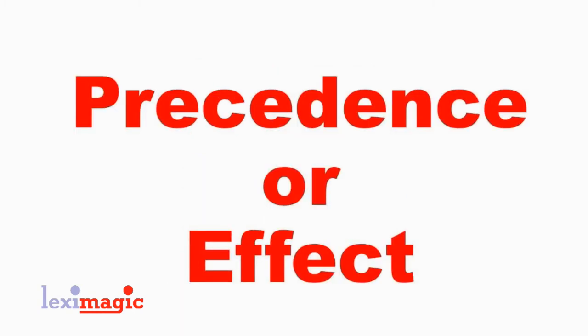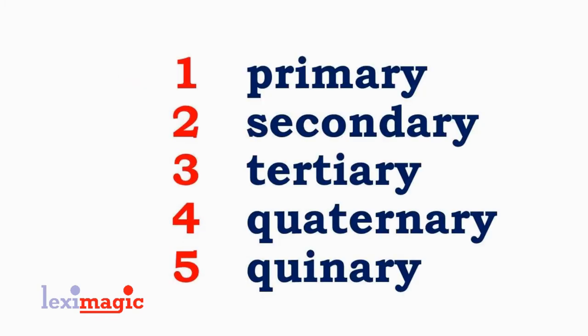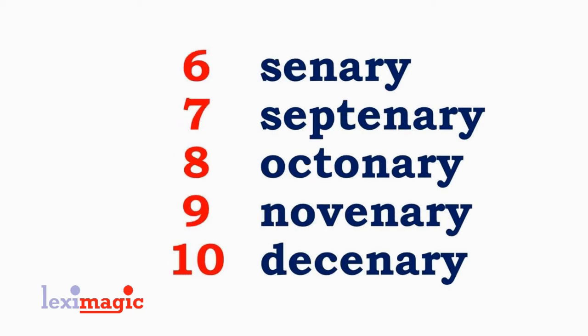Then we have various words which describe the order, precedence, or type of effect. Primary refers to the first, secondary refers to the second, tertiary to the third, quaternary to the fourth, quinary to the fifth, senary to the sixth, septenary to the seventh, octenary to the eighth, novenary to the ninth, and decenary to the tenth.